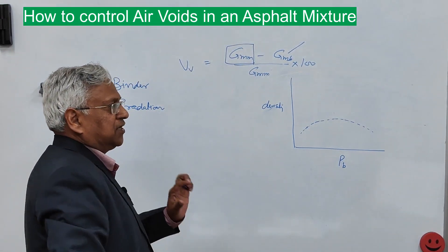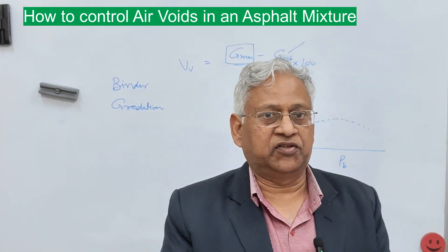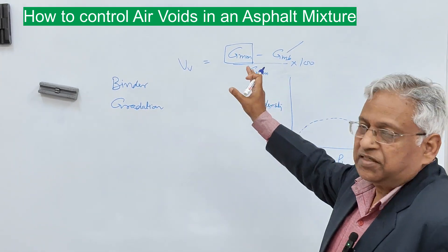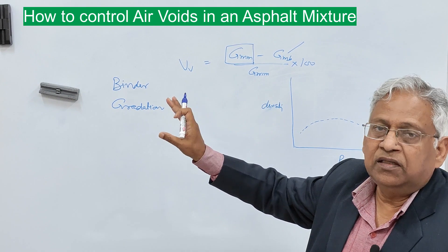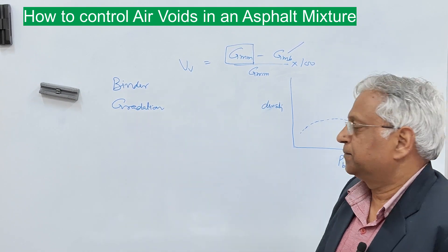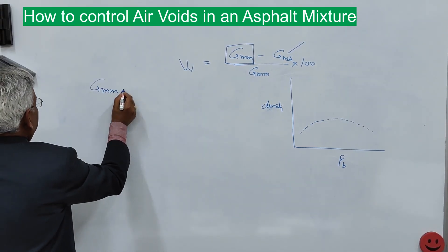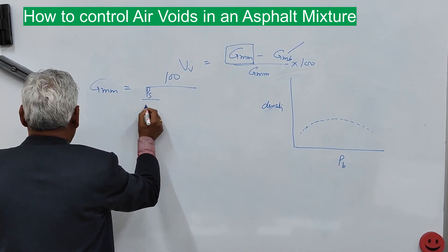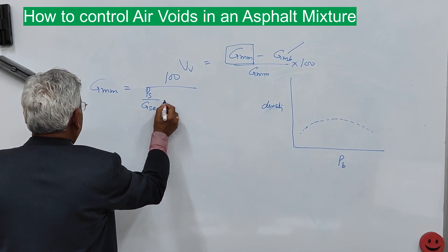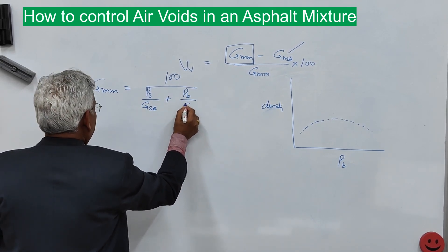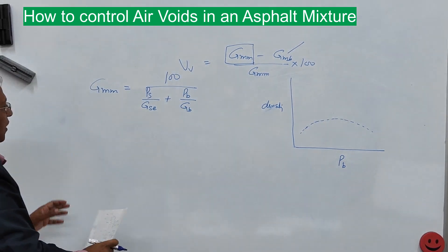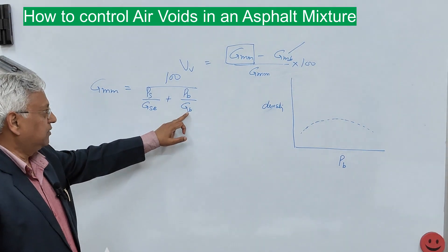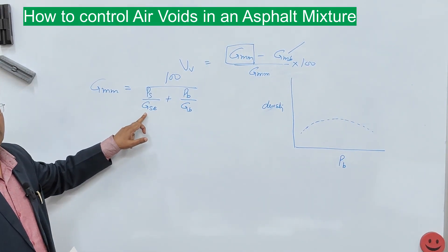Gmm is estimated on an uncompacted loose mixture — there is no concept of air voids when estimating the theoretical maximum specific gravity. Gmm is given by the equation: 100 / (Ps/Gse + Pb/Gb), where Ps is the percentage of stone aggregate, Pb is the percentage of binder, Gb is the specific gravity of binder, and Gse is the effective specific gravity of aggregates.